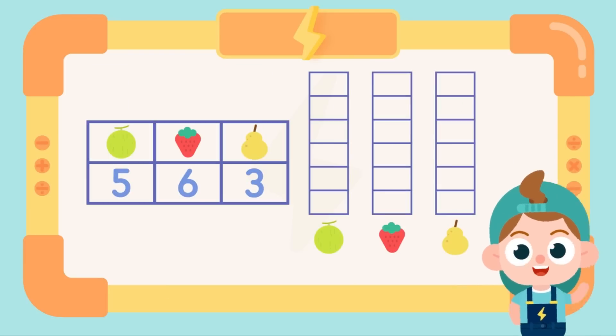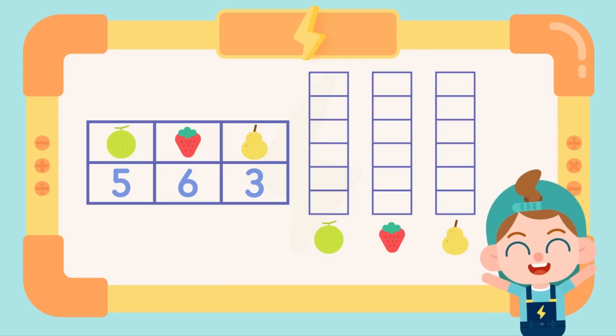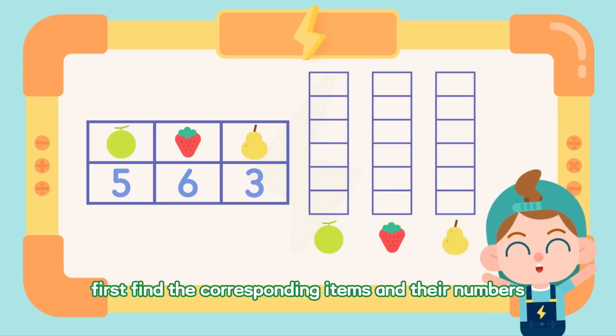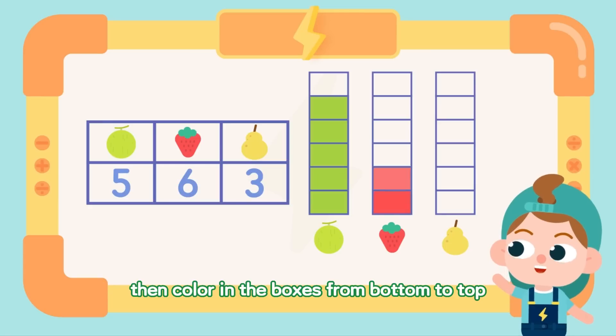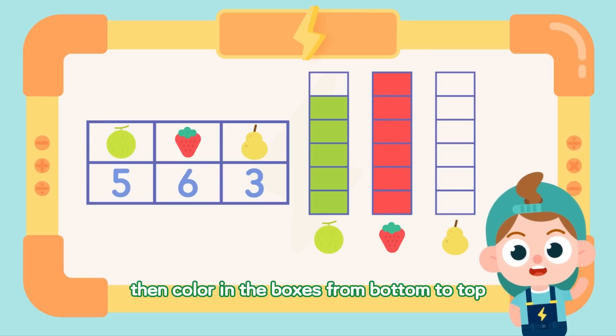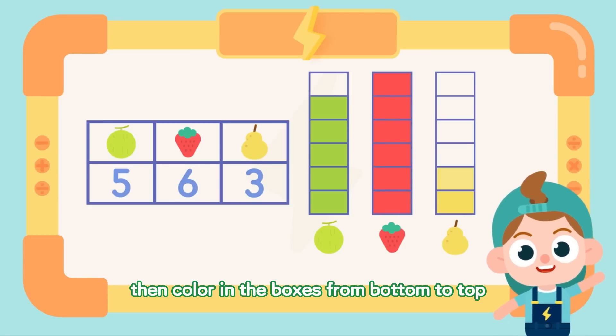When we convert a table into a bar chart, first find the corresponding items and their numbers, then color in the boxes from bottom to top.